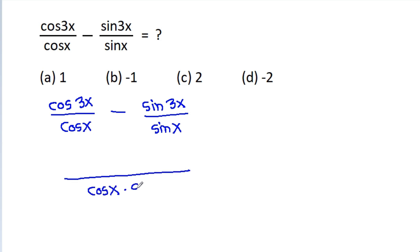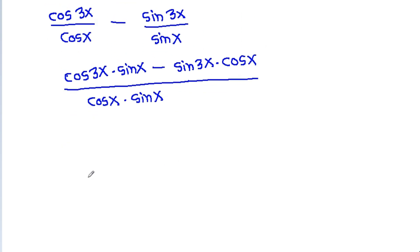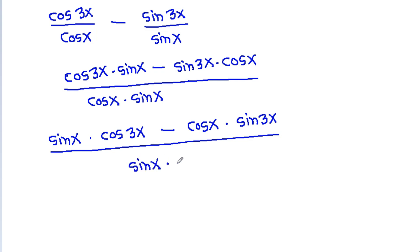Taking cos x times sin x as the LCM, we will get cos 3x times sin x minus sin 3x times cos x in the numerator. This gives us sin x times cos 3x minus cos x times sin 3x, all divided by sin x times cos x.